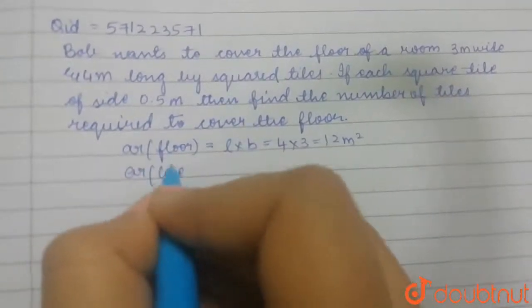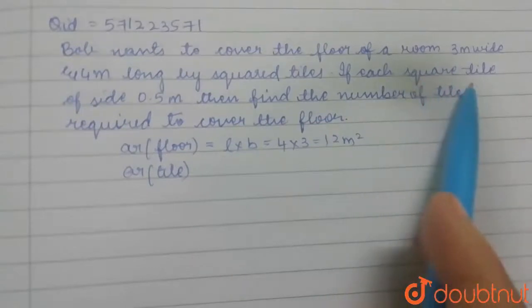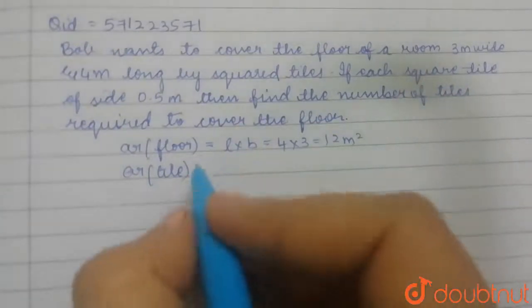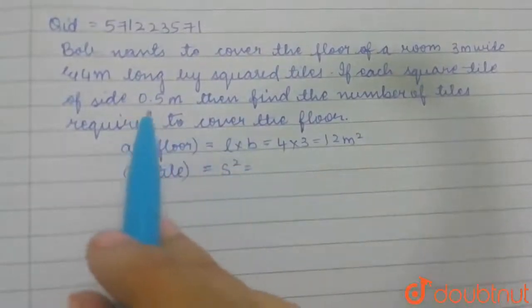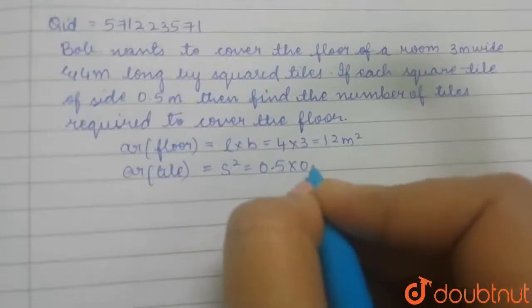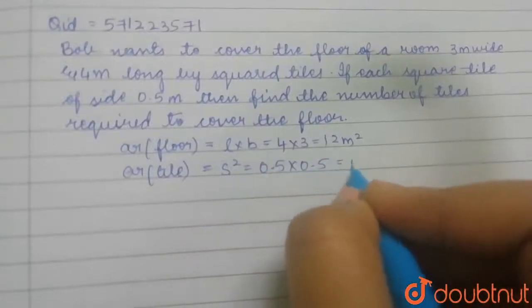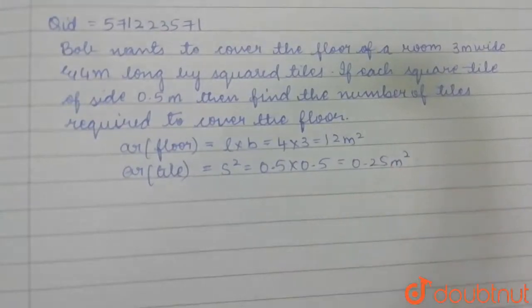What is tile? Here he has told that tiles are square in shape, so area of tile is area of a square, that is s square. He has given the side as 0.5 meters, so let us do 0.5 into 0.5 which will give you 0.25 meter square.